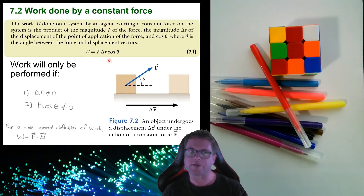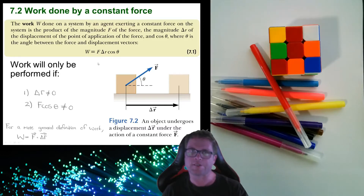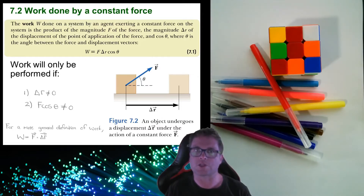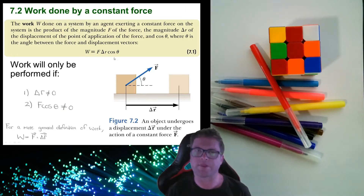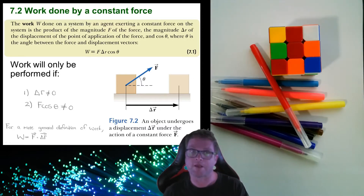Looking at this expression, work can be zero under different conditions. First, if the force is zero — no force applied. Second, if the displacement delta r is zero — a force acts but the object doesn't move. Third, cos of theta could be zero, which happens when theta equals 90 degrees, meaning the force is acting orthogonally to the displacement.